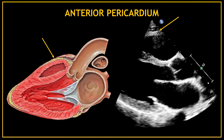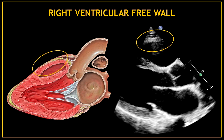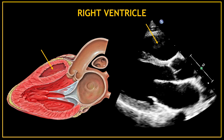The first very anterior thin line we can see there is the anterior pericardium. Under the pericardium we can find the right ventricular free wall. That first black area at the top corresponds to a chamber — that chamber is the right ventricle.